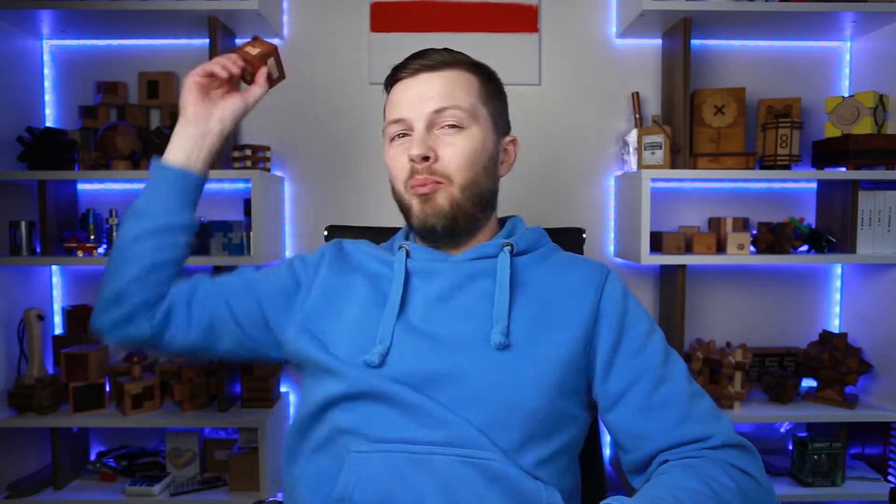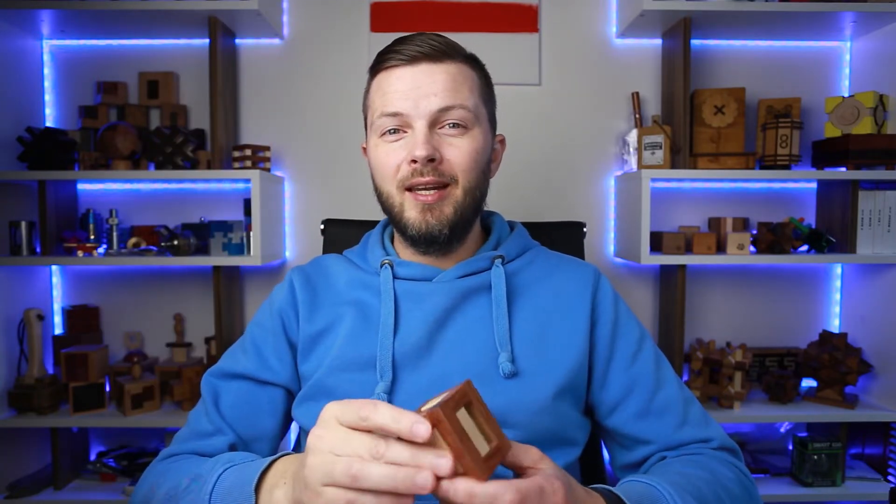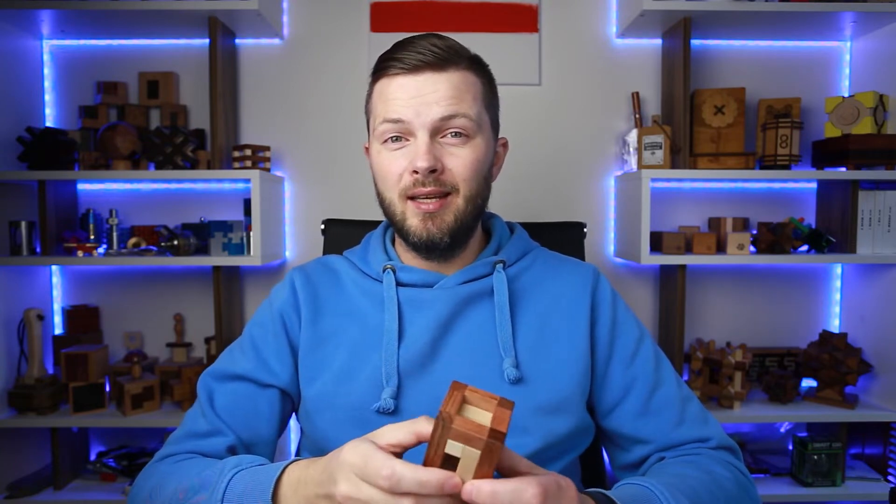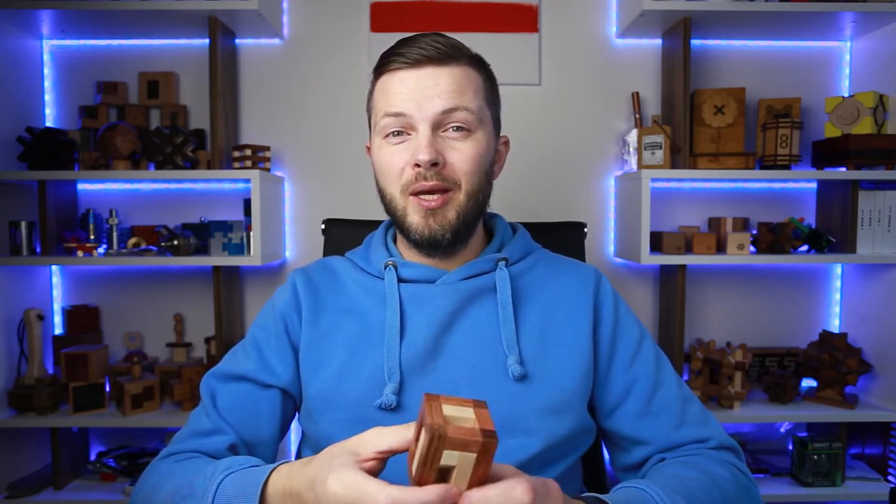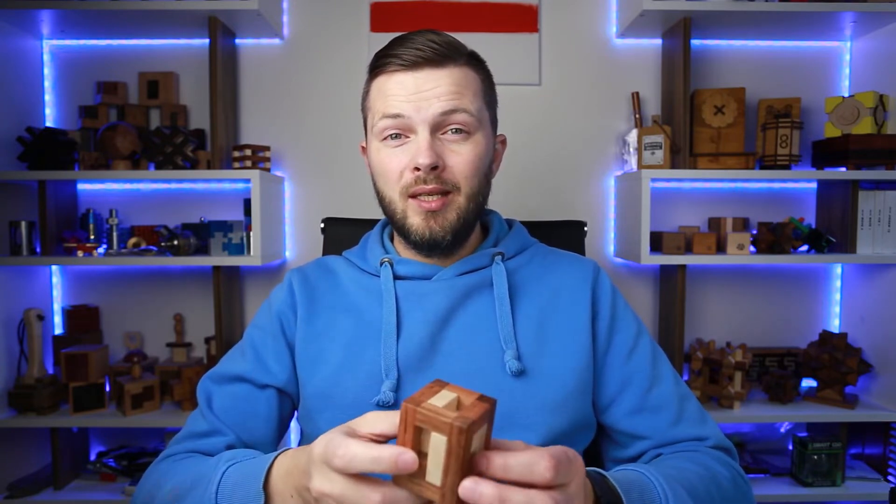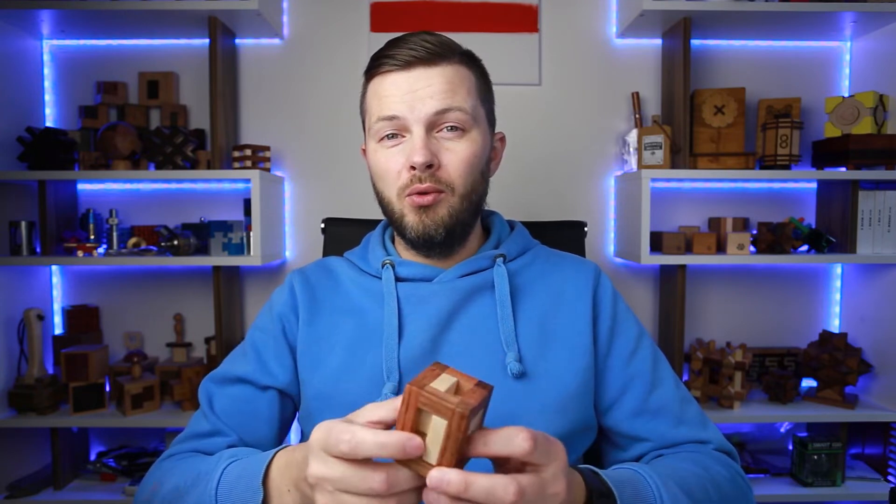So here is the puzzle. The name of this puzzle is Little Trick. It was made by Pelikan and designed by Klaas Jan Damstra. This puzzle is made of two different kinds of wood, babinga and maple. And the object of the puzzle is to remove all three parts from the frame and then put them back inside.